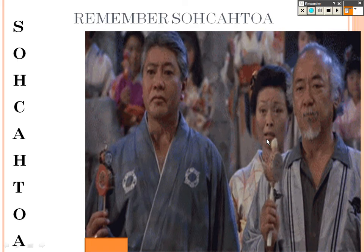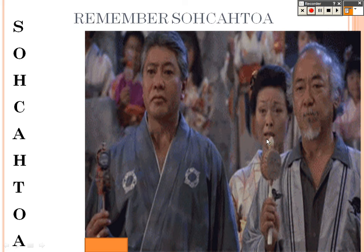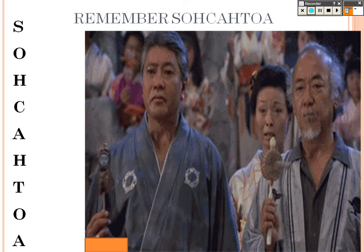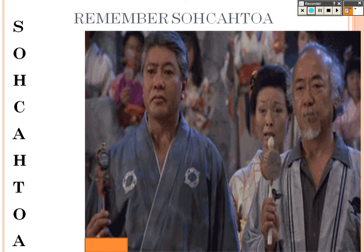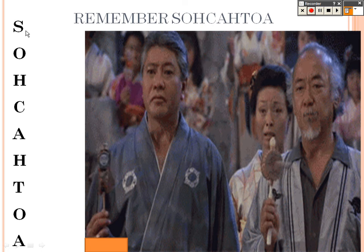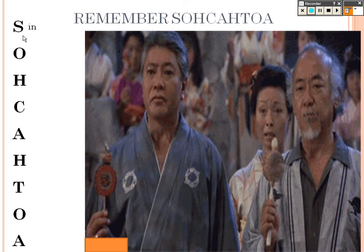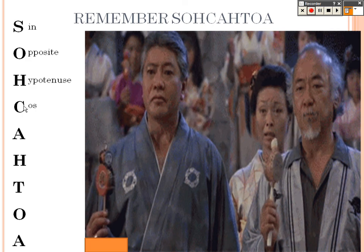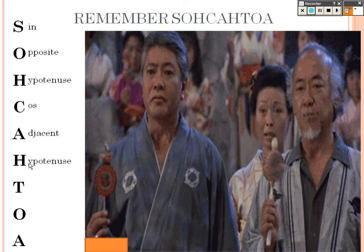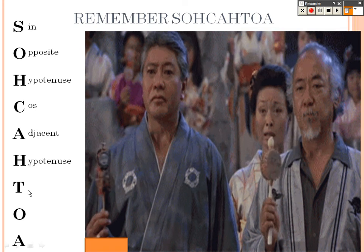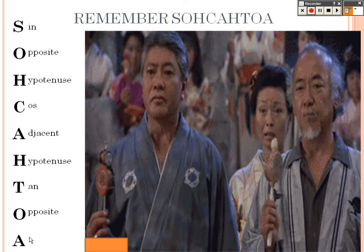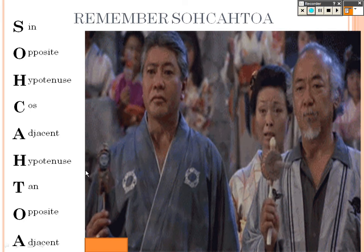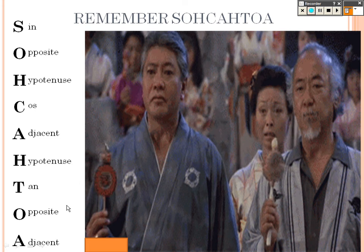So, how can you remember it? You can remember it very simply with SOHCAHTOA. This is that old phrase that we, in geometry, would try to teach you to remember sine, cosine, and tangent. Sine is opposite over hypotenuse. Cosine is adjacent over hypotenuse. And tangent is opposite over adjacent. And there you get SOHCAHTOA.